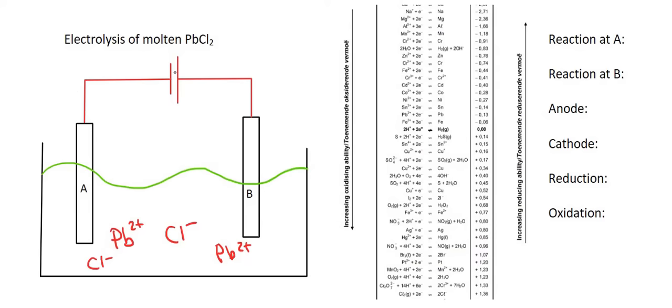Now what happens is due to the fact that we have a battery, we've got a negative and a positive. So because of this negative over here, when you've got a negative part of the battery, the electrons flow out of the negative terminal of the battery. And so because we have a whole lot of electrons collecting on this electrode, it becomes negatively charged. So what happens is that it attracts this Pb2+ towards that electrode.